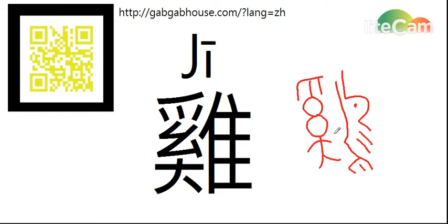I think some of you may have guessed it. It's just similar to a bird. And for this word, we pronounce it as 鸡 (jī). It means chicken.